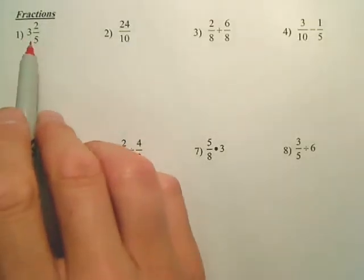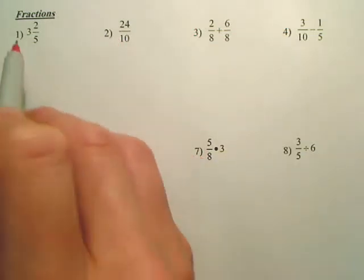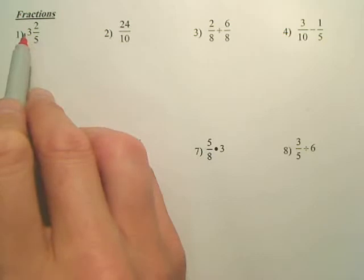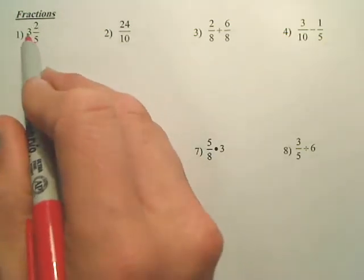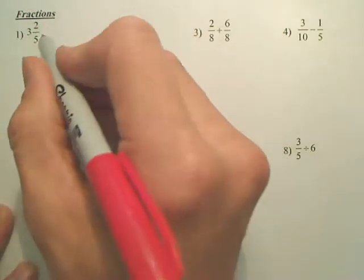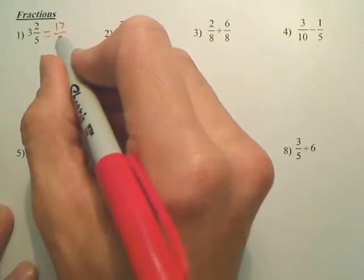All right, I want to change this to look like this. So what I basically would do, we'll multiply the 5 times the 3 and add the 2. So 5 times 3 is 15, 15 plus 2 is 17. And I leave the 5 on top.